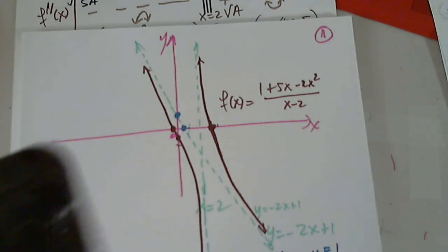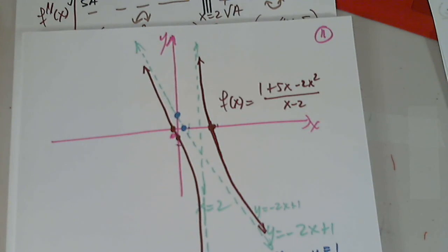Any questions? Do we feel a little bit better now about slant asymptotes?